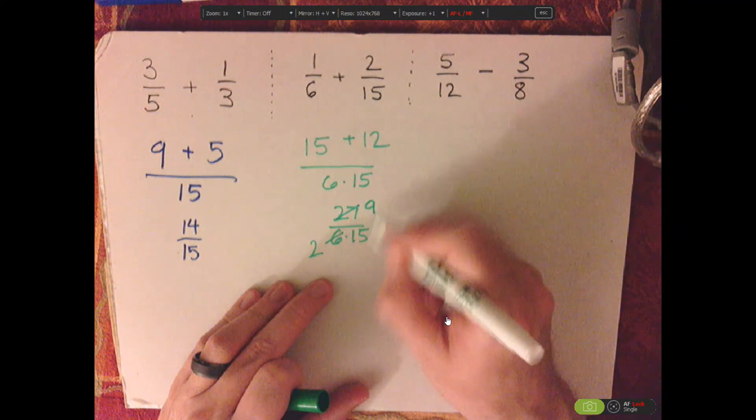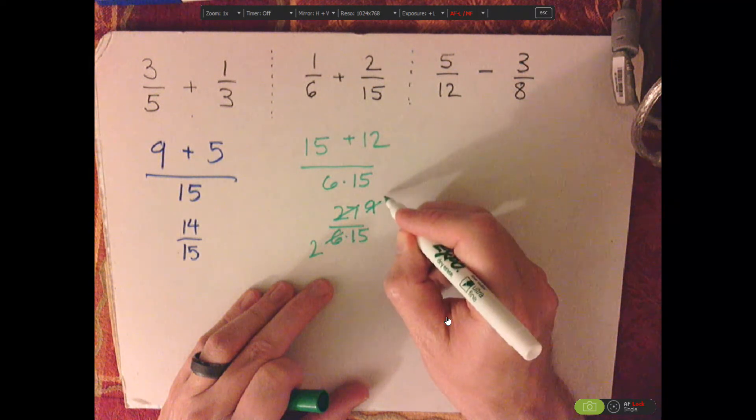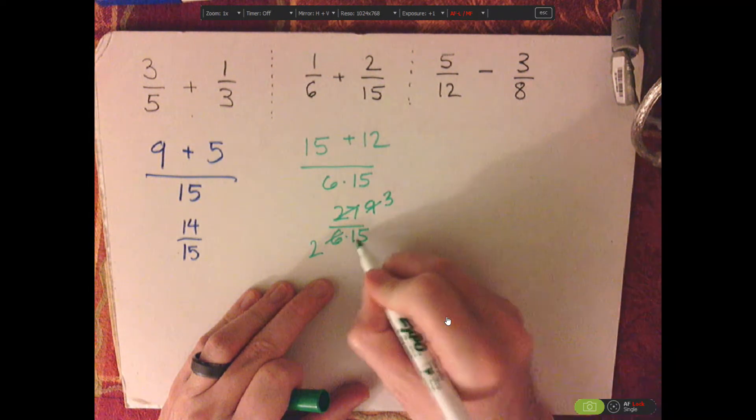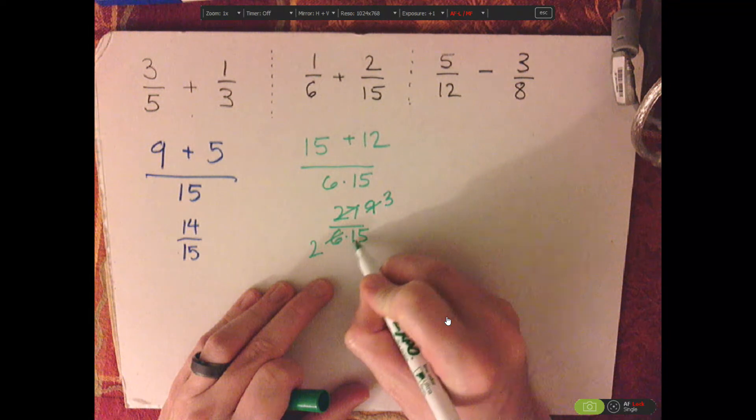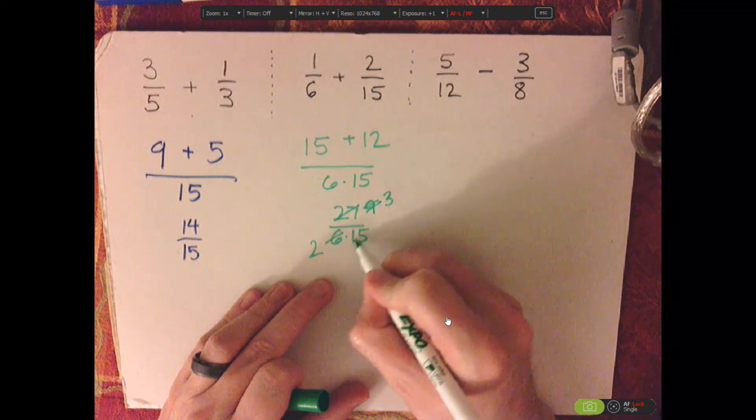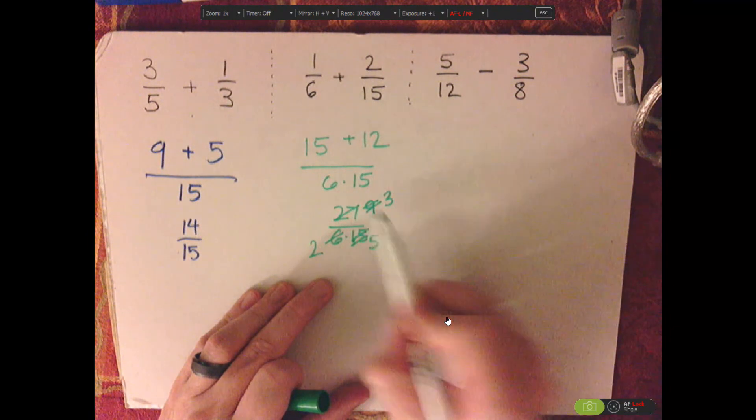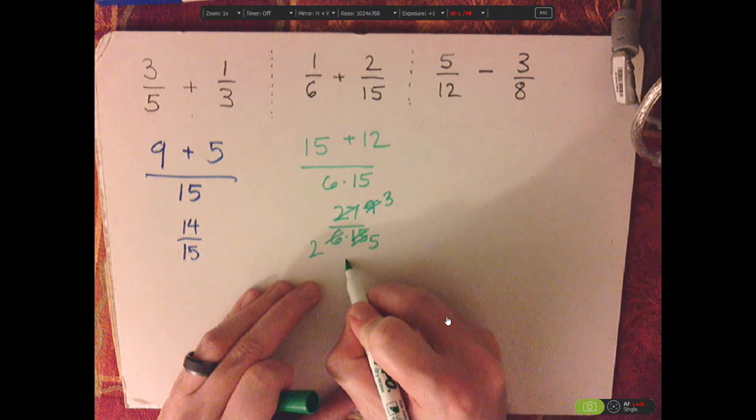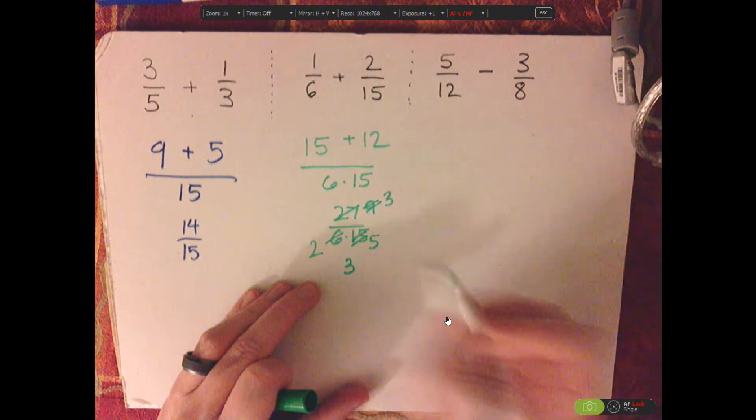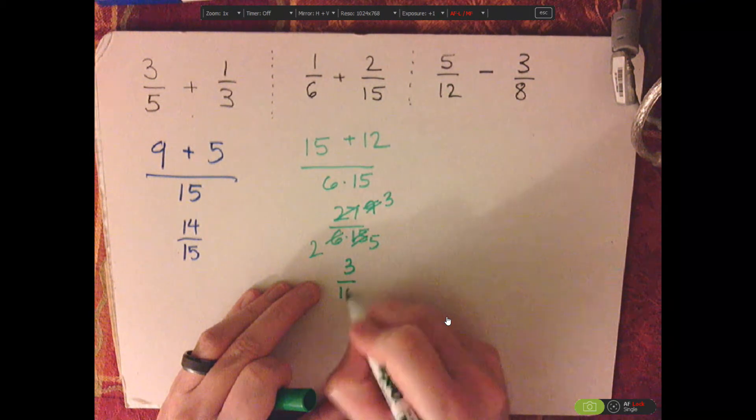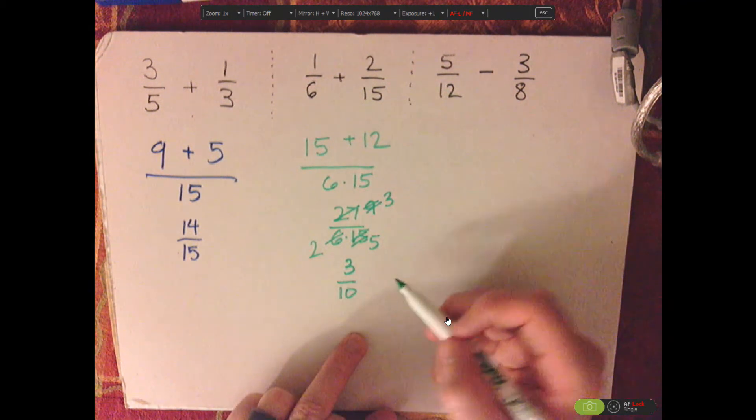3 goes into both 9 and 15. So 3 goes into 9 three times. And then 3 goes into 15 five times. So my numerator, that's 3. 2 times 5 is 10. So that's 3 tenths.